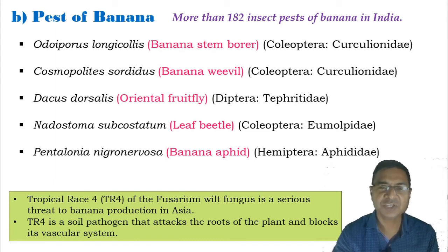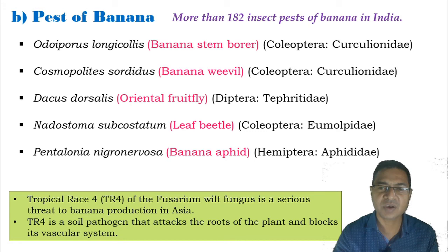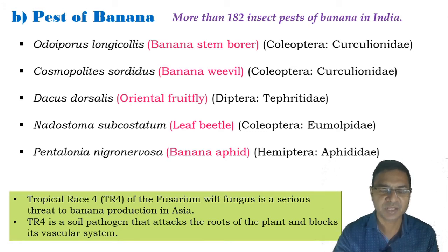In addition, one fungus — TR4, the tropical race 4 — is a soil pathogen which causes severe damage to the banana plant.